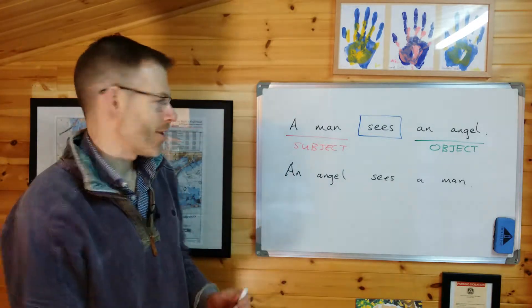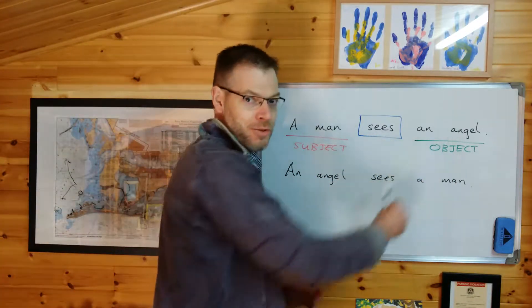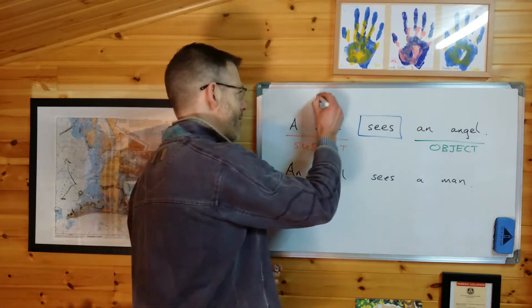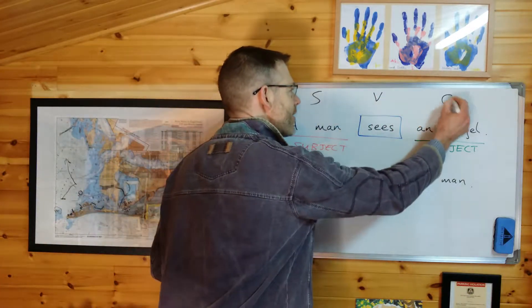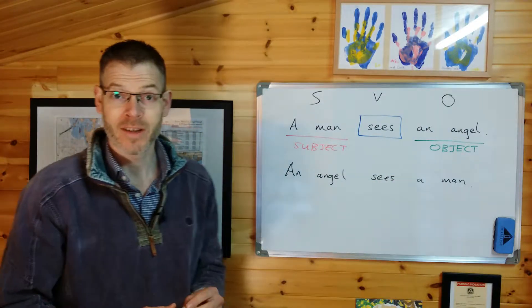Because in English, we go subject, verb, object. English is an SVO language. Sometimes grammarians say this: SVO, subject, verb, object. Okay, so that's how English works.